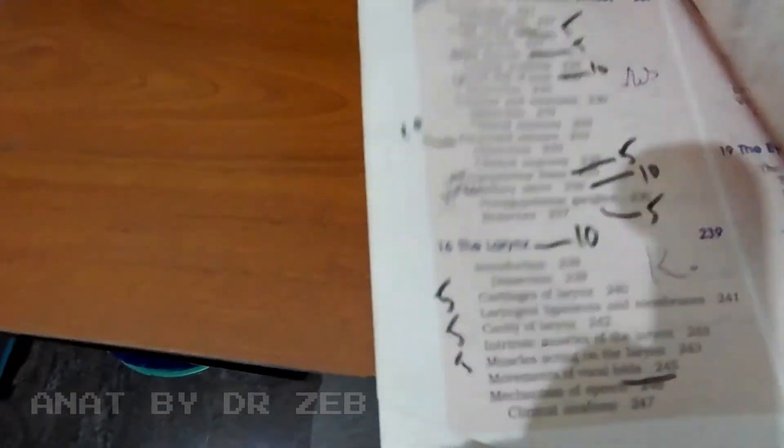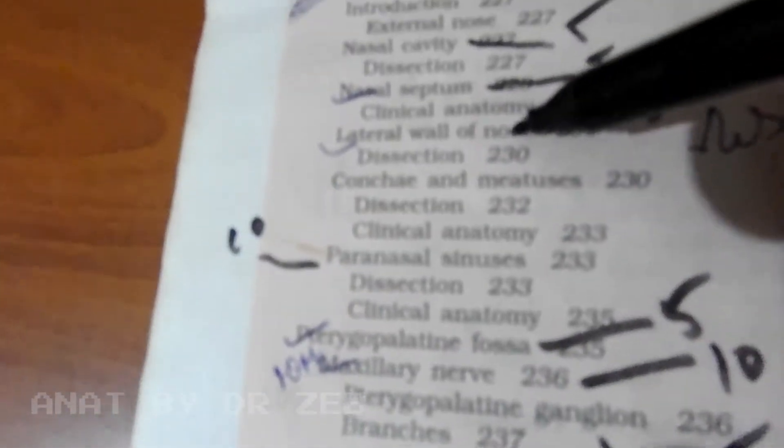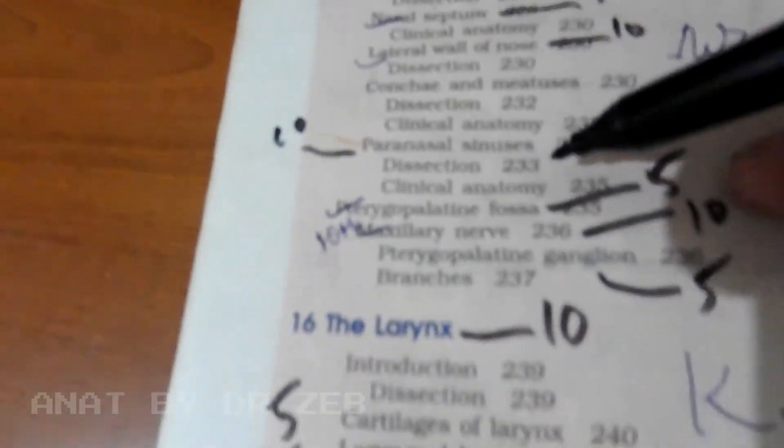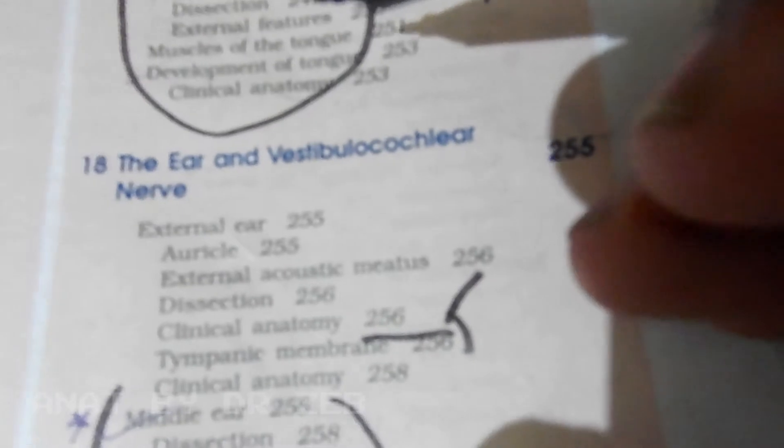Nose and paranasal sinus, the pharynx for ten marks, lateral wall for ten marks, paranasal for five marks. Larynx is for ten marks, tongue is for ten marks, otherwise the muscles of tongue, papilla of tongue for five each.